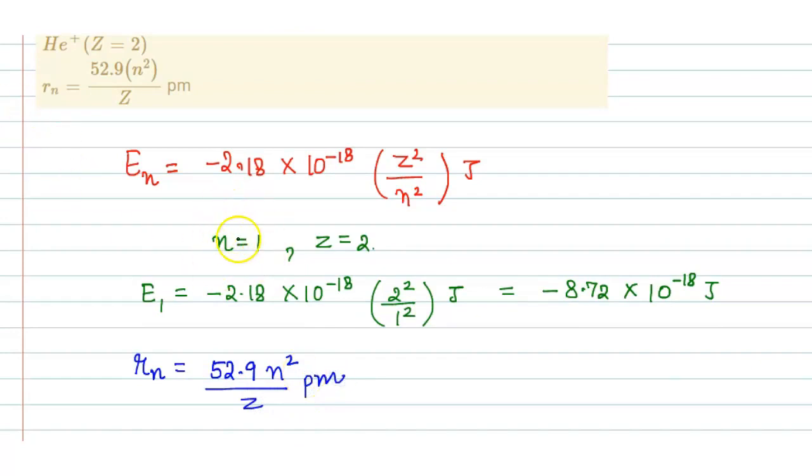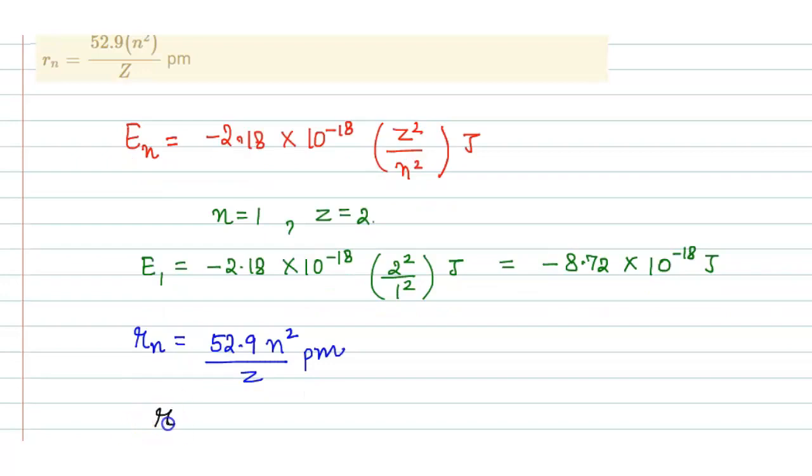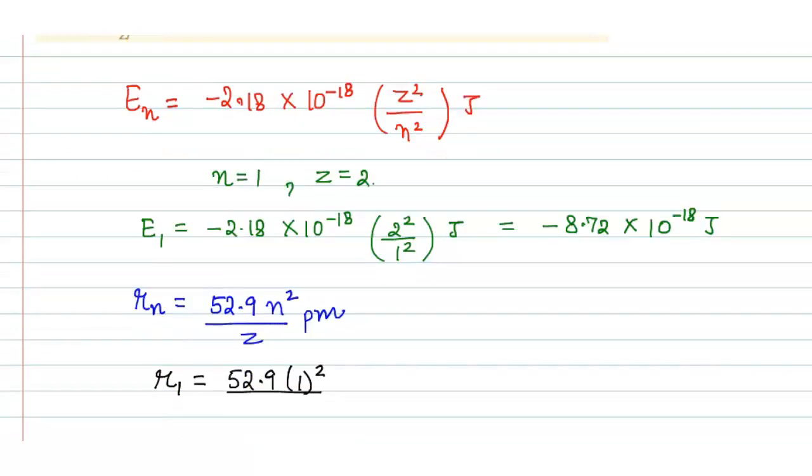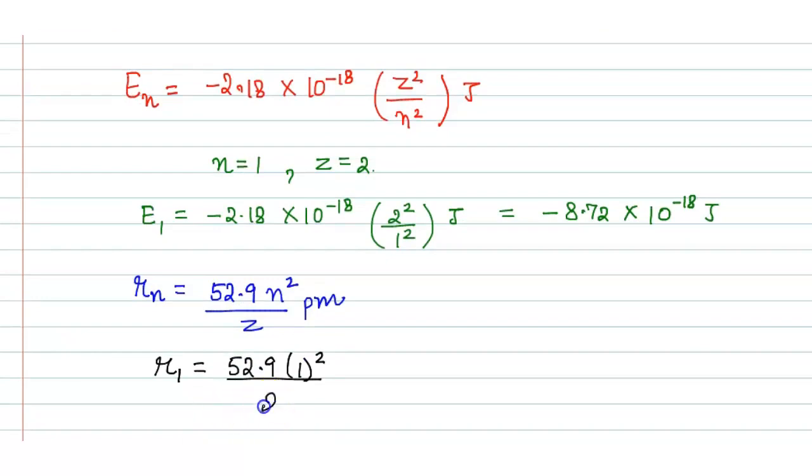The value of n square is 1 and z value is 2. Putting these values into the formula, it will be 52.9 n square divided by 2. So it will be equal to 26.45 picometers.